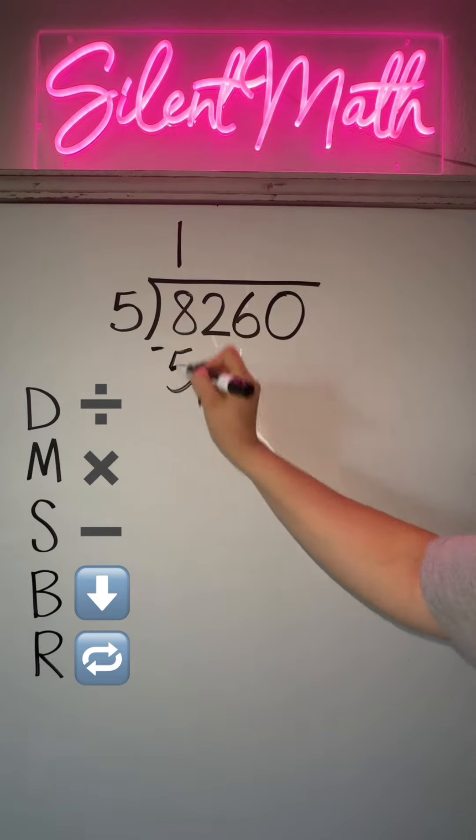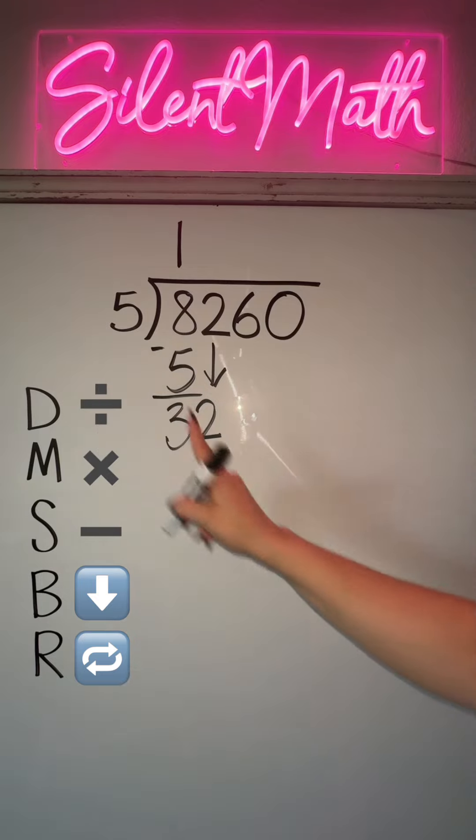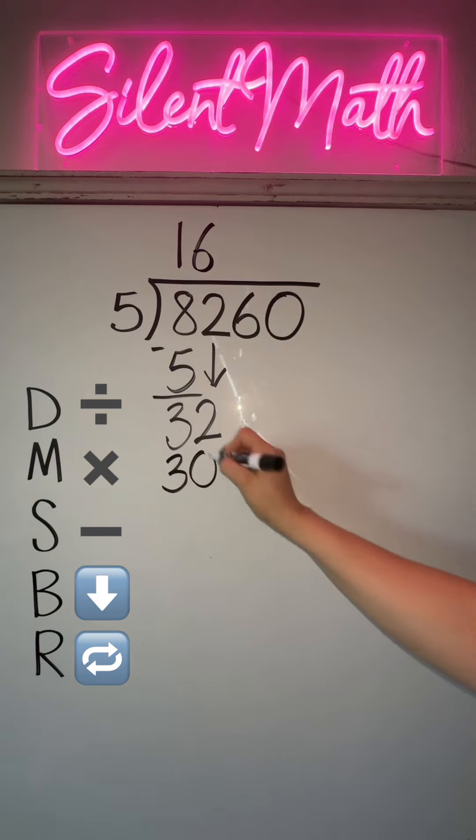Now you're going to subtract: 8 minus 5 is 3. You're going to bring down the next digit. Now you have 32 and you're going to repeat the process. How many groups of 5 can go into 32? Maximum 6 groups, because 6 times 5 is 30. That was us multiplying. Now we're going to subtract: 32 minus 30 is 2.